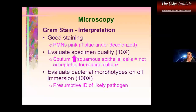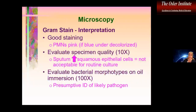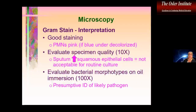Gram staining is still one of the least expensive and most important tests we can do in microbiology. It gives us a lot of information about specimen quality — we know that respiratory specimens with a large number of squamous epithelial cells shouldn't be cultured. Many labs also don't culture wound specimens with excess squamous epithelial cells. It also allows us to evaluate morphotypes on oil immersion and is really important for determining presumptive identifications of likely pathogens. If host cells are pink, the stain is good; if they're blue, you've under-decolorized.